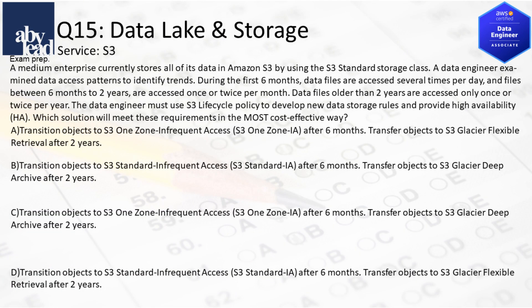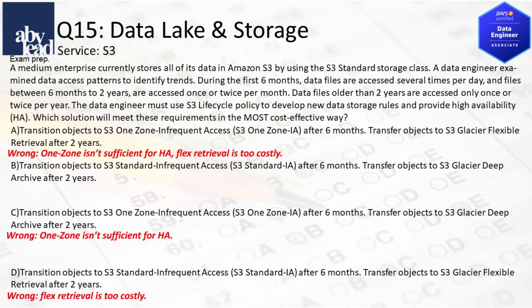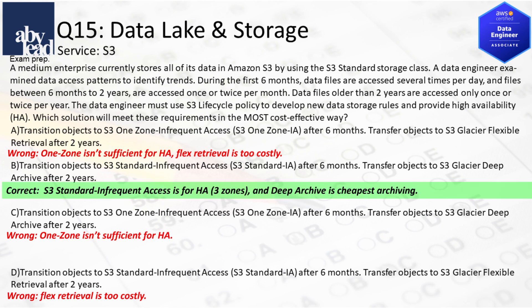Question 15: How do you realize a cost-effective, highly available S3 storage lifecycle with different retentions and access patterns? One Zone is insufficient for high availability, and Glacier Flexible Retrieval is too costly. For this use case, you best apply the highly available S3 Standard for Frequent Access with transition to Deep Archive as the cheapest archiving option.